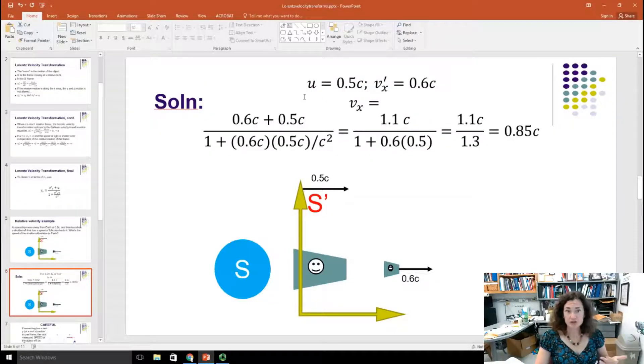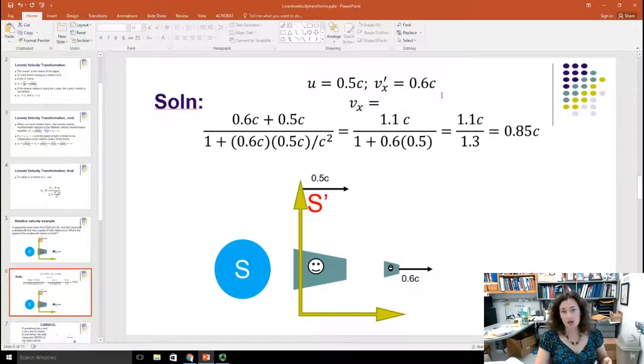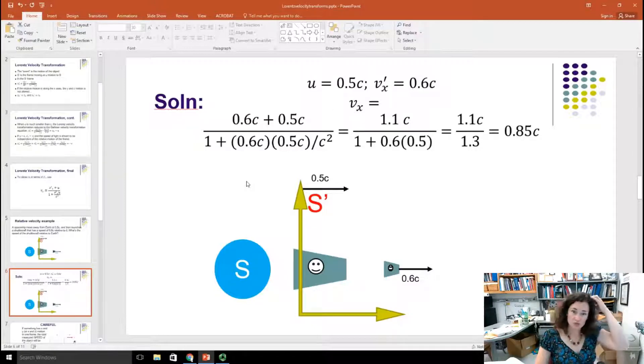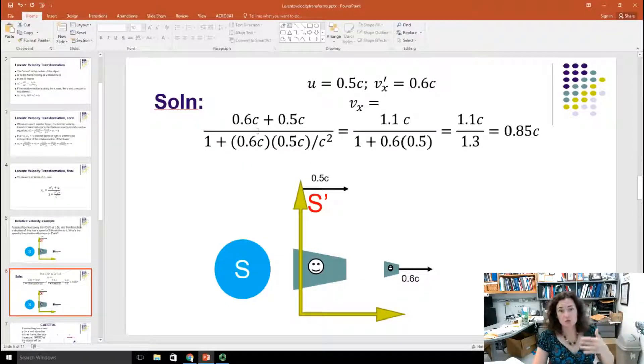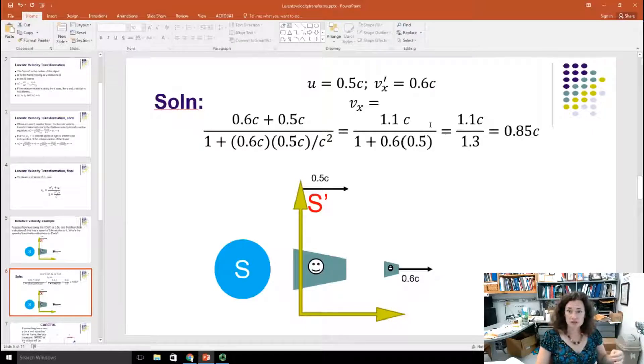Identifying my variables, U here is equal to 0.5c, and VX prime is equal to 0.6c. Plugging in for my equation for VX, VX is equal to U plus VX prime over 1 plus VX prime times U over C squared. So plugging in those numbers there, I end up with 1.1c over 1 plus 0.6 times 0.5, which gives me 1.1c over 1.3, and when I divide those things out I get 0.85c. So a person on Earth would measure the shuttlecraft as traveling at 85% the speed of light.